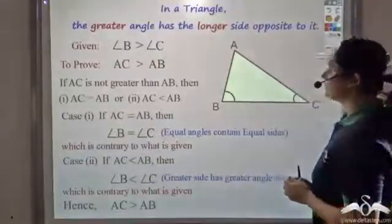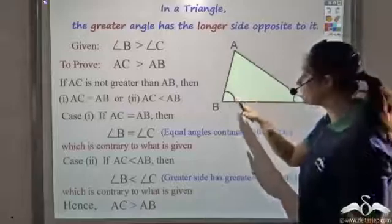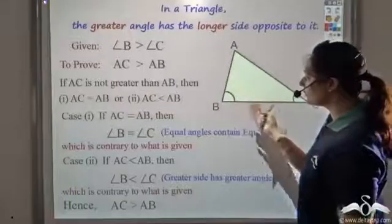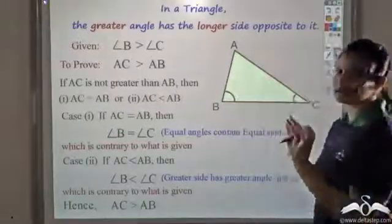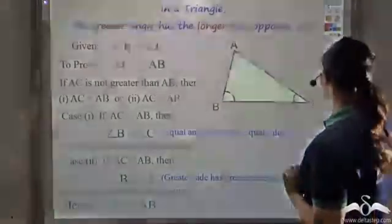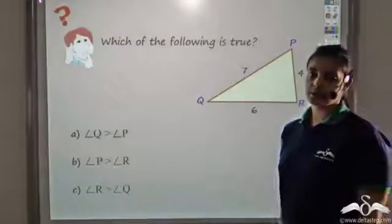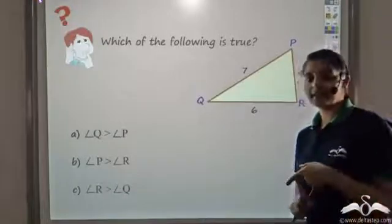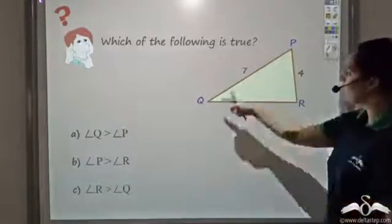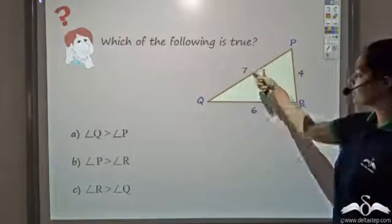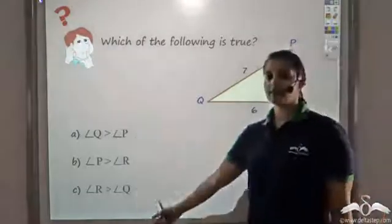So we have seen that in a triangle the greater side has a greater angle opposite to it, and if the angle is greater then the side opposite to it is also greater. Now, given a triangle PQR with three sides, tell me which of the following is true.